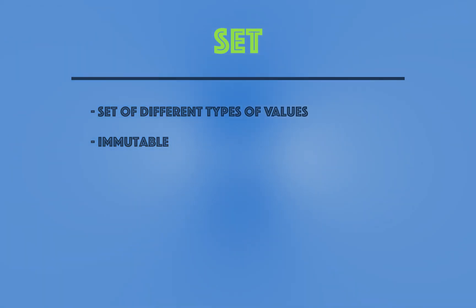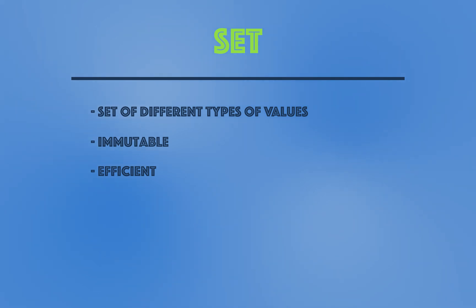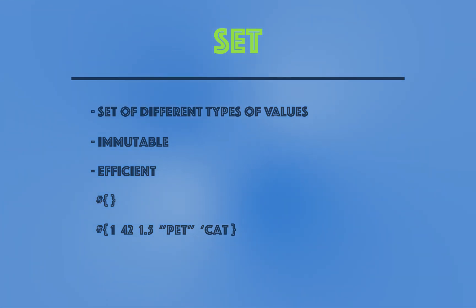You can be assured that the other function will not update or change your set. They might use your set to create a new set with other components, but the set you passed will not be changed — you can rely on it to be immutable. Sets are also very efficient; they are based on trees as an underlying structure. Here are some examples: you can have an empty set, or a set containing the number 1, 42, 1.5, a string like "pet", and a symbol like "cat".